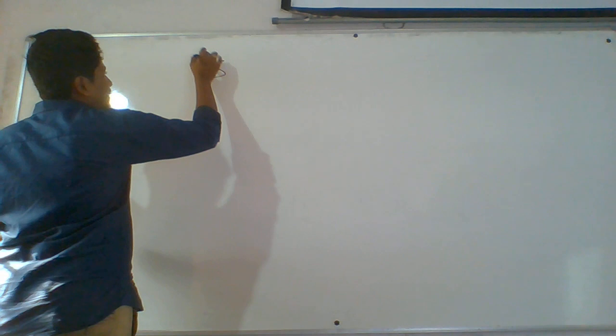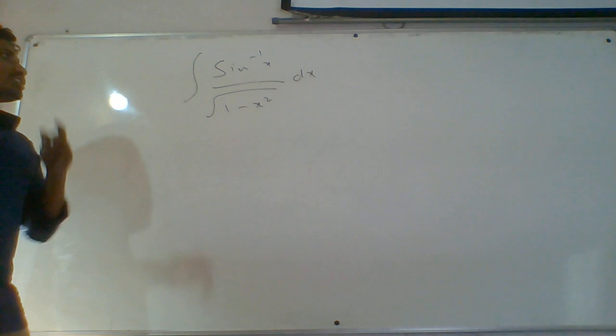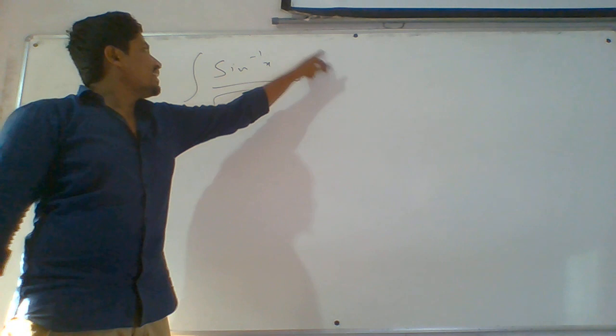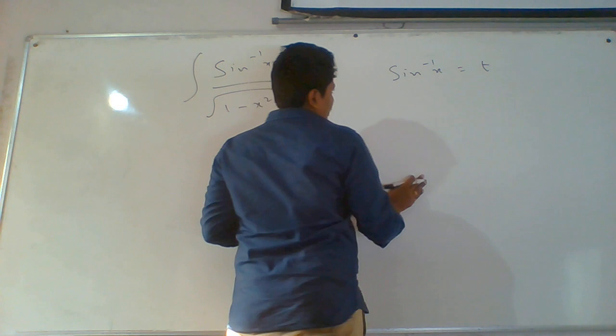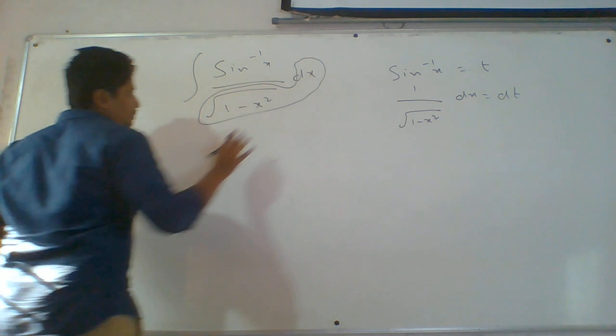Integral of sin inverse x by root of (1 minus x square) dx. If you know derivative formulas: the derivative of sin inverse x is 1 by root of (1 minus x square), and derivative of x gives dx. So this total equals dt and x equals t. Consider sin inverse x as t; then 1 by root (1 minus x square) dx equals dt. In the place of sin inverse x we put t, giving integral t dt.